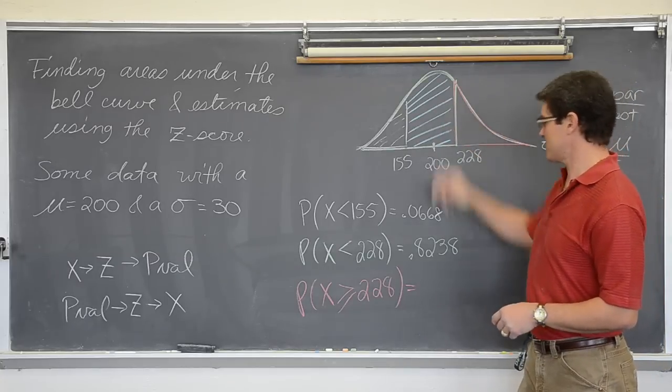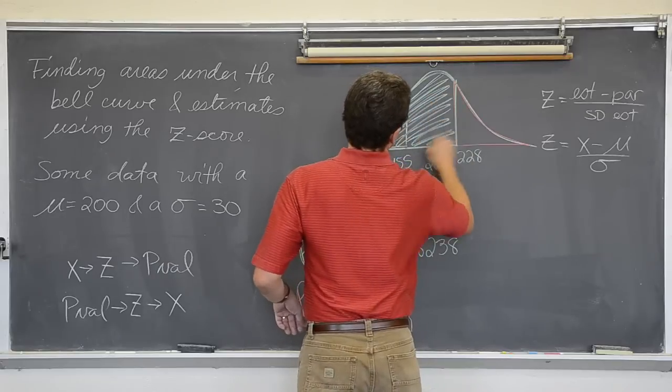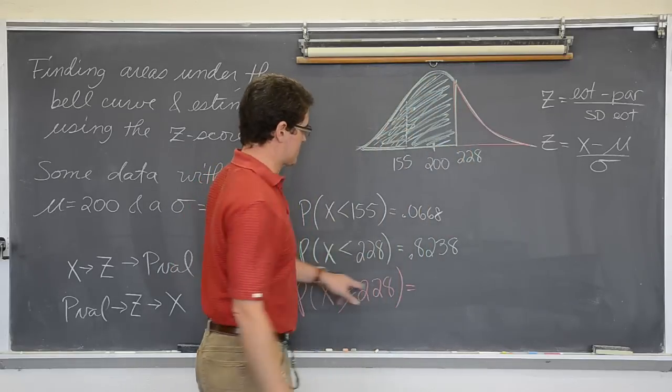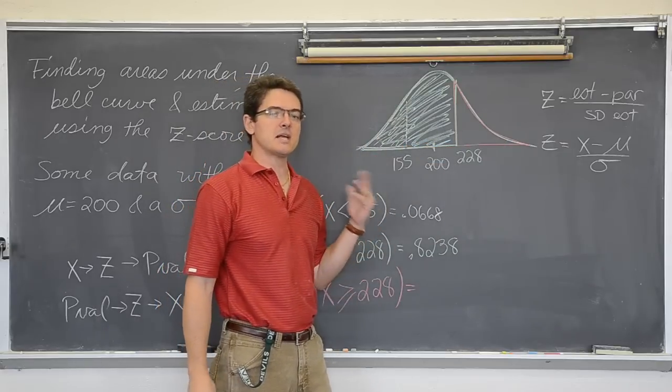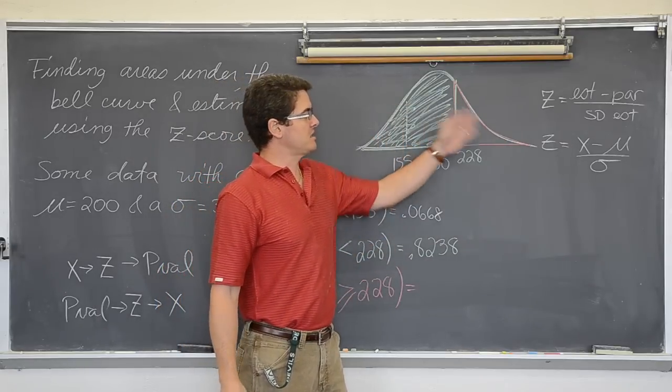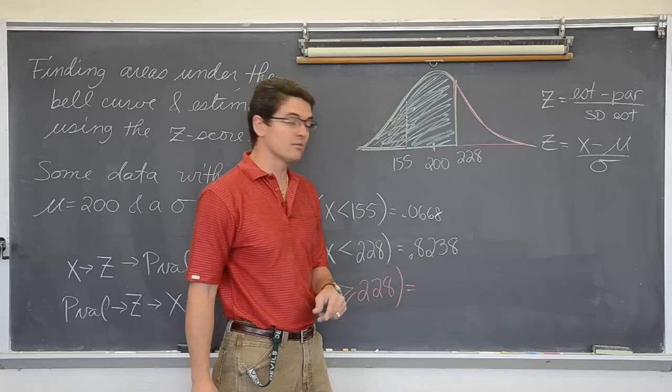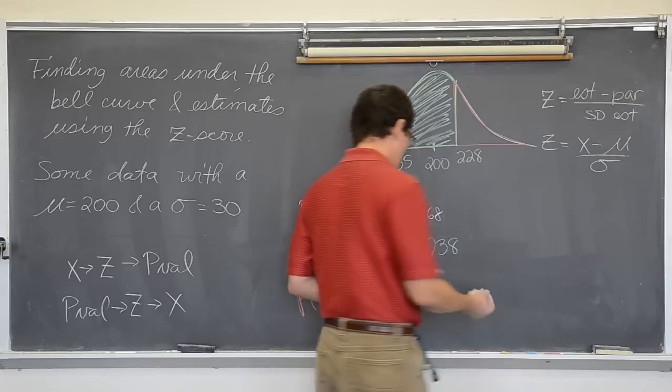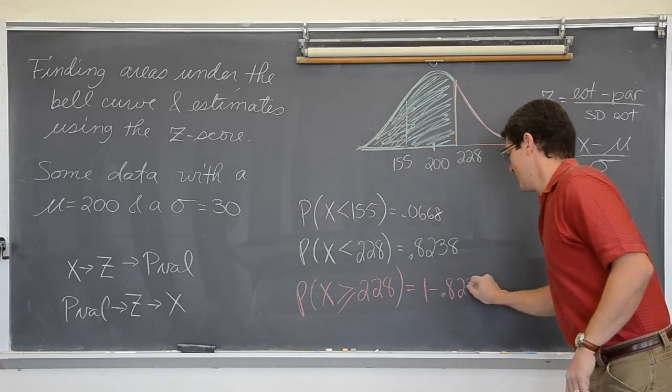To the right of 228, if this is a density curve and I am focused on this green area, all of this which is 0.8238, how much is on the other side? Well, if it is a density curve, the area has to equal one. Well, if the left side is 0.8238, the right side has to be one minus 0.8238.